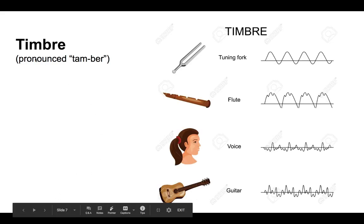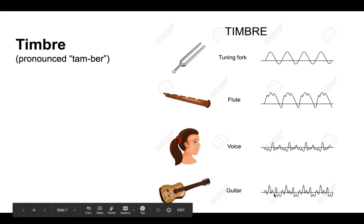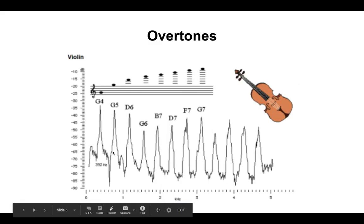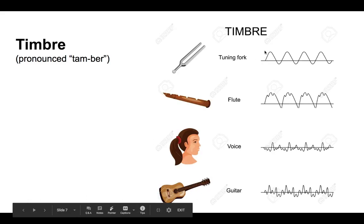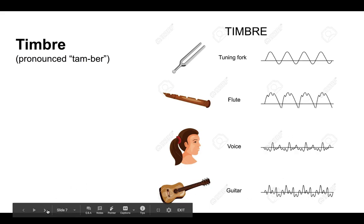And that takes us finally to timbre. It's spelled timbre, but it's pronounced timbre. And timbre is the key to this. So that is why different instruments sound different when they play the same note. Because it's the amount of those overtones and the volume of those overtones is going to be different for each instrument, resulting in a different overall waveform. You can see here these examples. And that's what's going to give each instrument its characteristic sound or timbre.